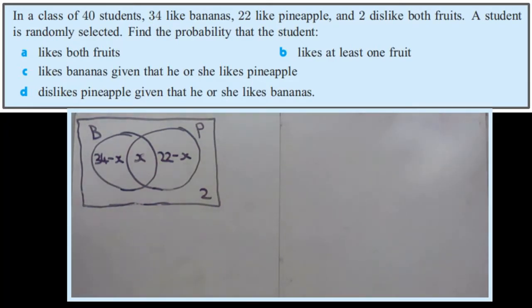Right, so then we're going to use this number of 40. So we know that there's 40 in the universe, so these four regions, this number plus this number plus this number plus this number must add up to 40. So, 34 minus X, plus X, plus 22 minus X, plus 2, must equal 40.